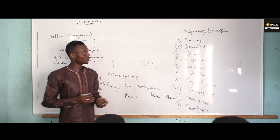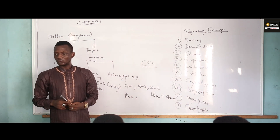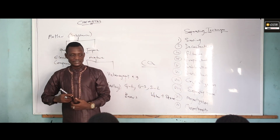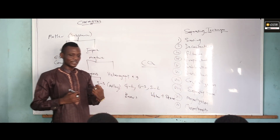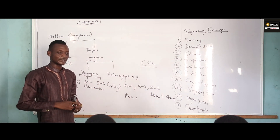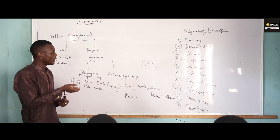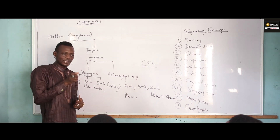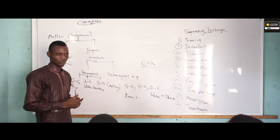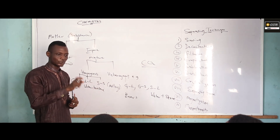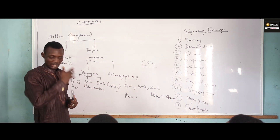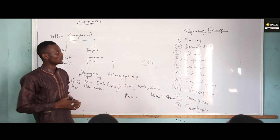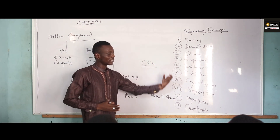Now let me take them from the first one. The first one is sieving. Sieving is a separating technique which we use to separate a substance or a mixture which has different size particles — majorly solid particles. For example, if you are having rice and beans mixed together, which type of separating technique are you going to use?